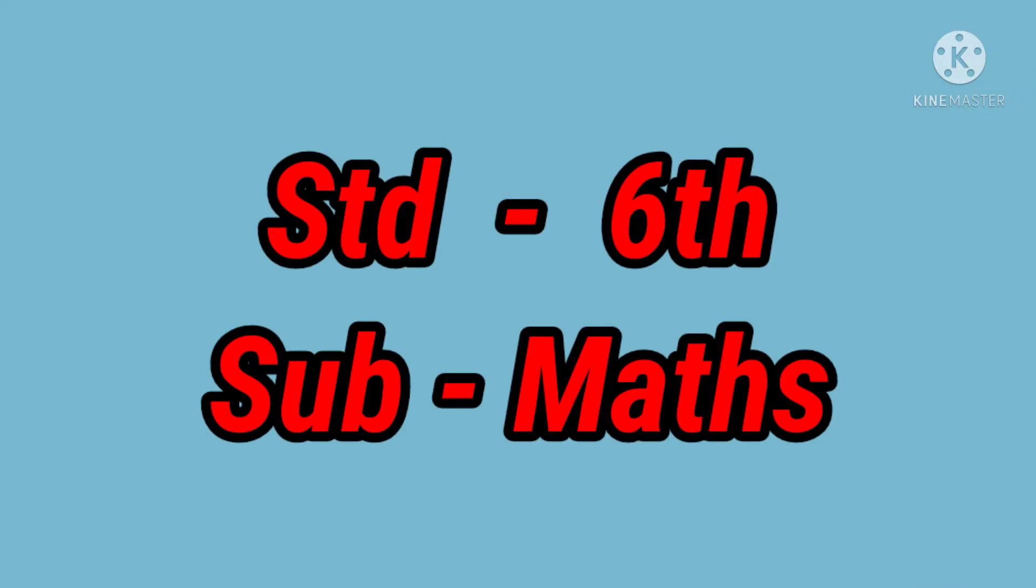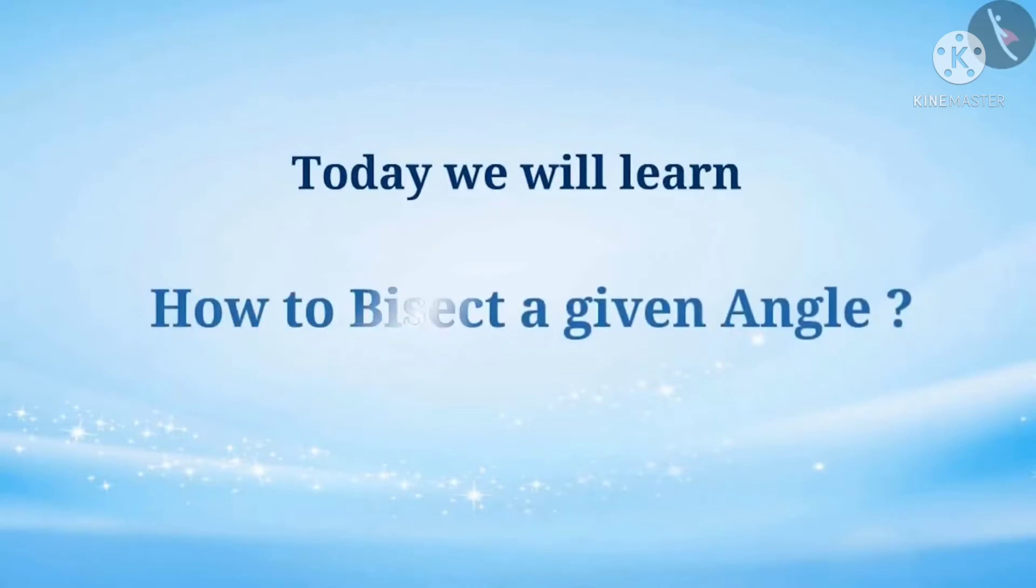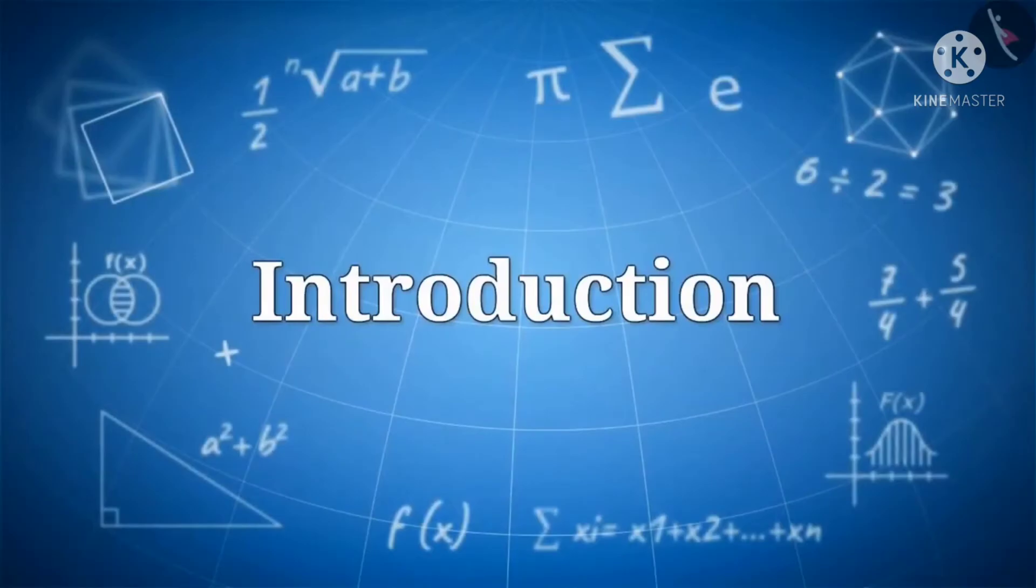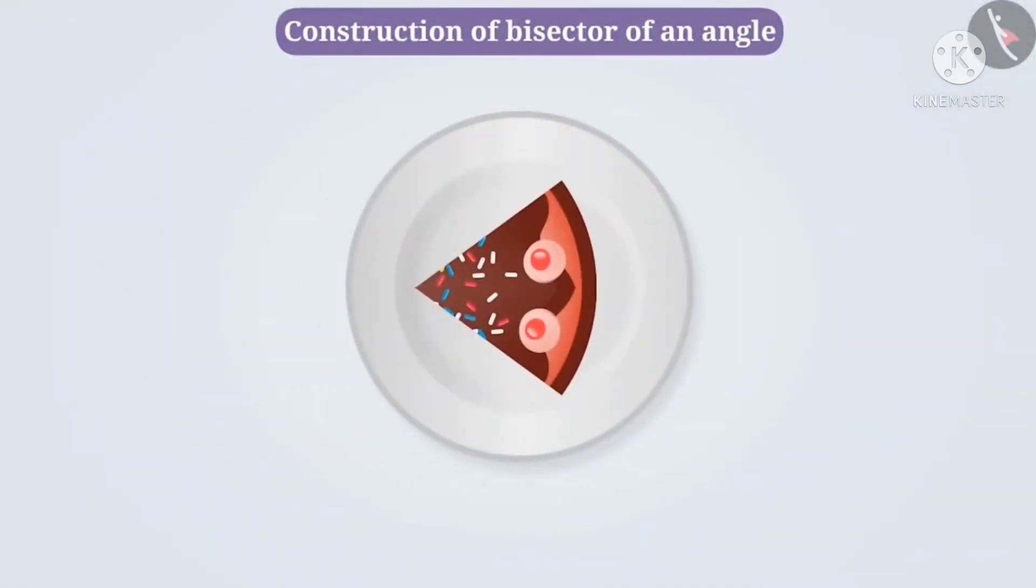Hello students, today we will learn how to bisect a given angle. Using a piece of cake as an example, we can make two equal parts of this piece of cake. How is it possible? By using a knife...